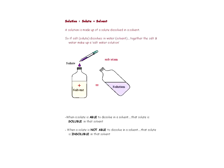A solution is made up of a solute dissolved in a solvent — that's a really important sentence you should be able to write out. For example, if a solute such as salt dissolves in water, which is the solvent, together the salt and the water make up a salt water solution. Adding solute to a solvent gives you a solution.